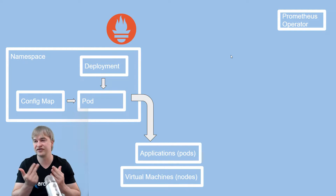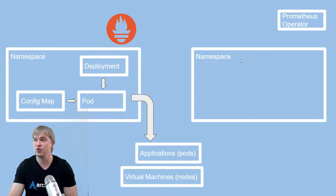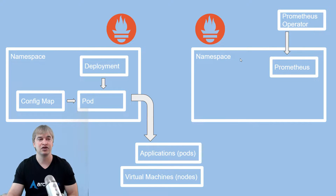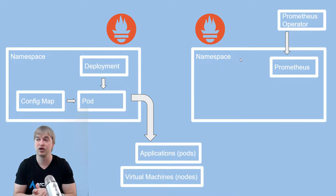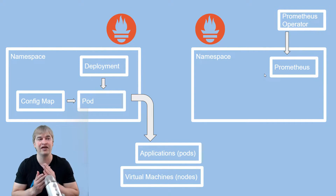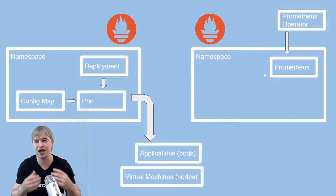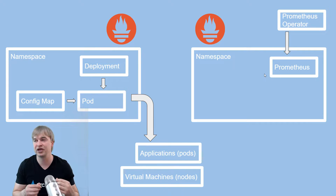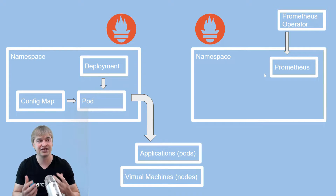We drop a Prometheus operator inside our cluster using a normal Kubernetes deployment. When the Prometheus operator comes alive, it creates custom resource definitions. A new resource called Prometheus is created, so we just define a small YAML file that gives us the name of the Prometheus instance and the service account we want to use. We can have one in a monitoring namespace that monitors the Kubernetes API and all the virtual machines, and another namespace called apps with a Prometheus instance dedicated to monitoring microservices — giving us flexibility to run multiple Prometheus instances with ease.